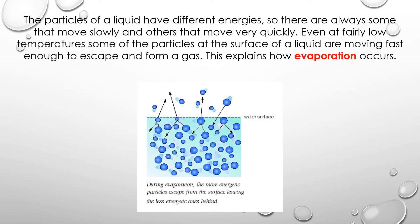The particles of a liquid have different energies, so there are always some that move slowly and others that move very quickly. Even at fairly low temperatures, some of the particles at the surface of a liquid are moving fast enough to escape and form a gas. This explains how evaporation occurs. For example, if you have a puddle of water, it will eventually disappear because evaporation occurs.